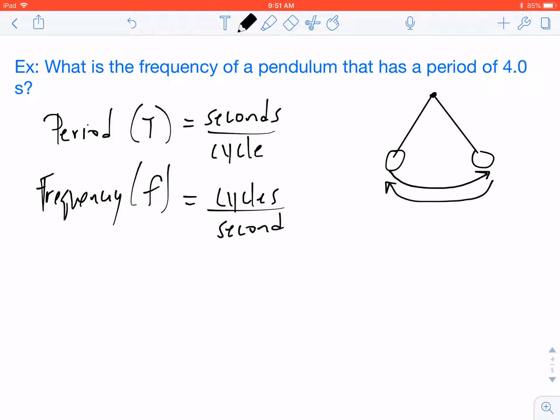And so as you can see, these are reciprocals of each other. Period is seconds per cycle. Frequency is cycles per second. So in abbreviated equation form, period equals one over frequency, and frequency equals one over the period. Once again, that's because they are reciprocals of each other.